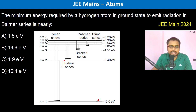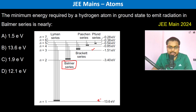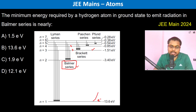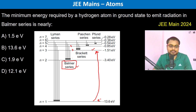For the Balmer series to happen, the electrons should be in higher orbitals than two — transitions from three to two, four to two, and so on constitute the Balmer series. Therefore the electron must be able to reach at least the third orbital, so the minimum energy required is calculated accordingly.